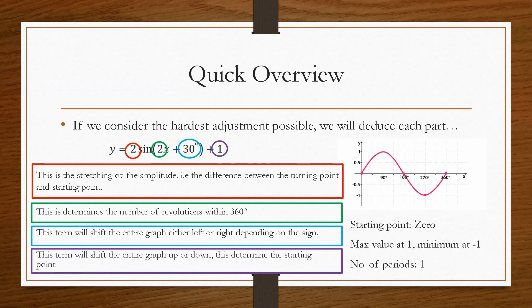And then the final parameter is, if we have a value plus or minus just by itself, it's not attached to the sine or the cos term at all. This simply means that the entire graph will shift up or down. And this has an effect on the starting position. So if it's plus, the whole graph will move up. If it is negative, the whole graph will move down.